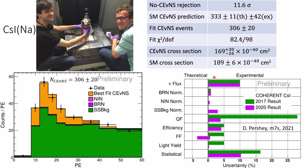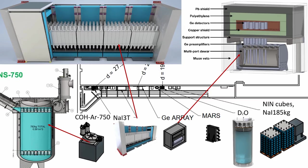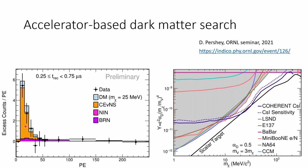Now the largest uncertainty comes from the neutrino flux from the source. That's why we are designing and constructing a heavy water detector to measure the neutrino flux in situ. The liquid argon detector will be enlarged, and the cesium iodide detector is retired. A large high-purity germanium detector array and a large sodium iodide detector array are under construction. With so many detectors at the same source, we can also check for dark matter created from the same beam. Our sensitivity to dark matter-normal matter coupling strength as a function of dark matter mass has gone beyond existing constraints over a wide mass range.